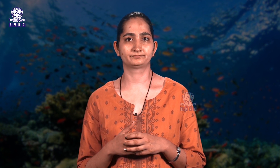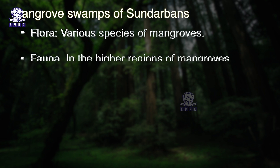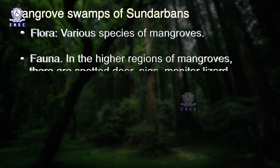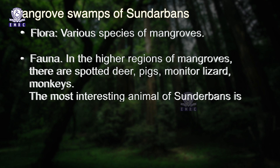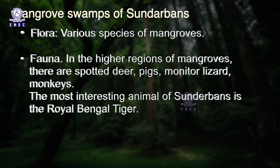The mangrove swamps of the Sundarbans are the delta of the Ganges, where both the Brahmaputra and the Ganges join and drain into the Bay of Bengal. Flora consists of various species of mangroves. Fauna in the higher regions of the mangroves includes spotted deer, pigs, monitor lizards, and monkeys. The most interesting animal of the Sundarbans is the Royal Bengal Tiger.